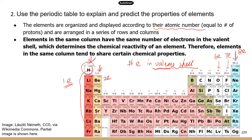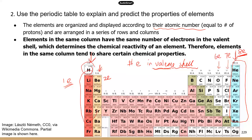We talked about the octet rule in the previous video for TEAS 6. So once you have eight electrons in the valence shell, it's a stable configuration. These elements are called noble gas elements, and they are very stable. They do not like to react with other atoms, so they're considered not very reactive and very stable chemically.